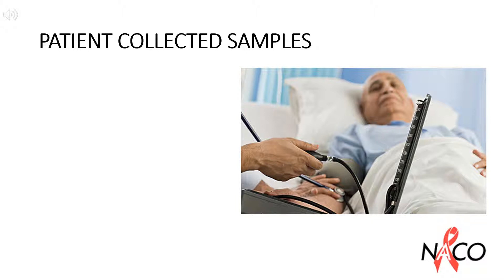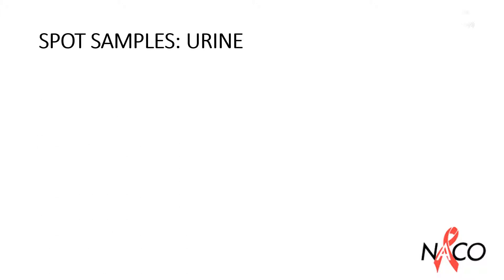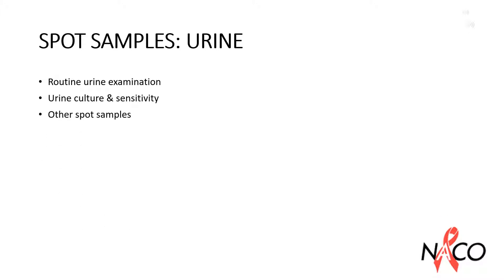Samples collected by patients themselves can be urine, stool, sputum and semen. Patients can be instructed to give urine as spot samples or a 24-hour sample. A spot sample or spot urine is the sampling of a single, untimed urine specimen voided spontaneously by the patient. Spot samples for urine can be used for routine urine examination, urine culture and sensitivity, and other spot samples.